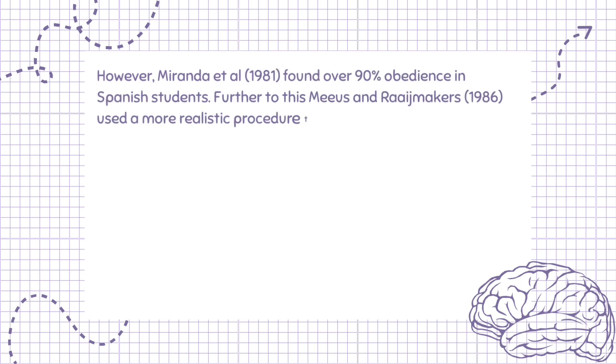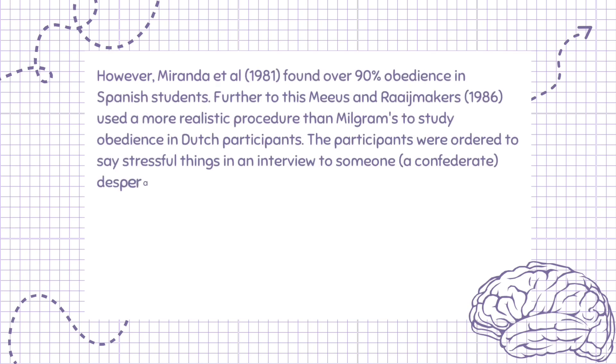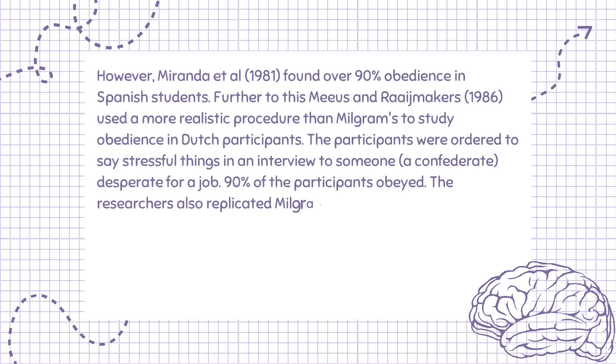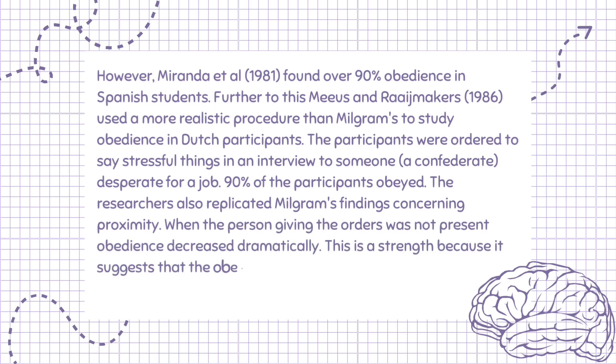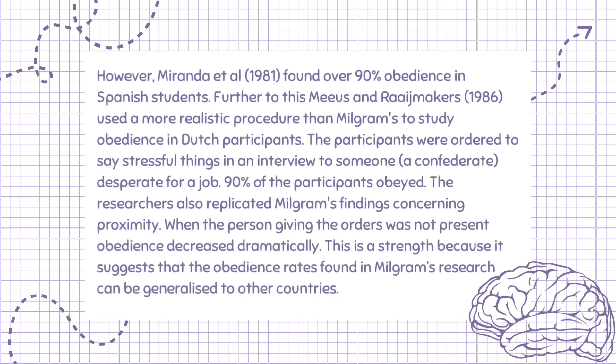However, Miranda et al. (1981) found over 90% obedience in Spanish students. Further to this, Meeus and Raaijmakers (1986) used a more realistic procedure than Milgram's to study obedience in Dutch participants. The participants were ordered to say stressful things in an interview to a confederate who was desperate for a job, and 90% of the participants obeyed.